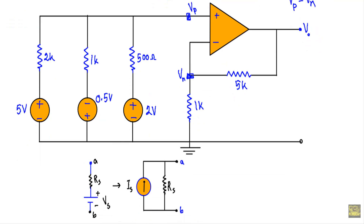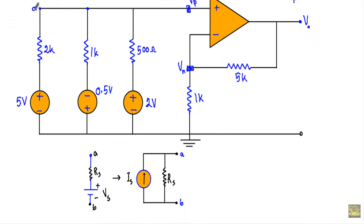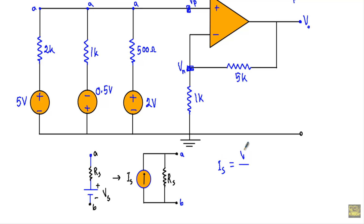When we have a voltage source in series with a resistor within a branch — let's call that terminal A — between terminal A and ground, we can replace the voltage source and resistor with a current source in parallel with that same resistor. Source transformation theorem states that a voltage source VS in series with RS between terminals A and B can be converted into a current source IS in parallel with RS, where IS equals VS divided by RS.